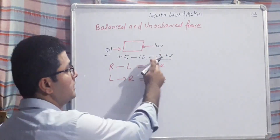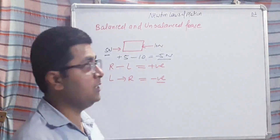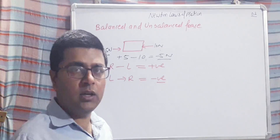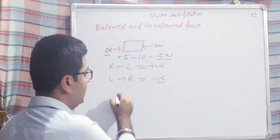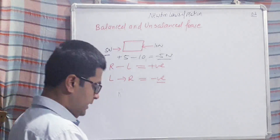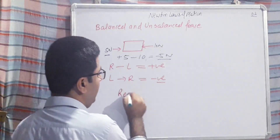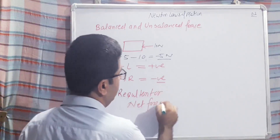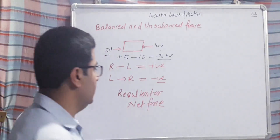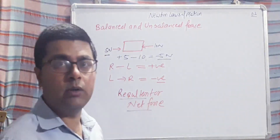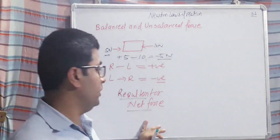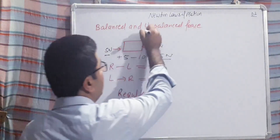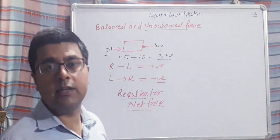This total force means the body experiences a net force in the left-to-right direction. This is called the resultant force or net force. So any body on which a net force is acting — that force is called an unbalanced force.